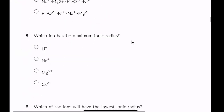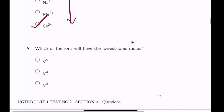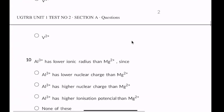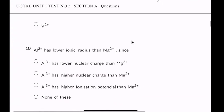Which ion has the maximum ionic radius? Cesium 2+. Top to bottom, ionic radius increases. Which of the ions will have the lowest ionic radius? Vanadium 5+. Also, Al3+ has a lower ionic radius than Mg2+.